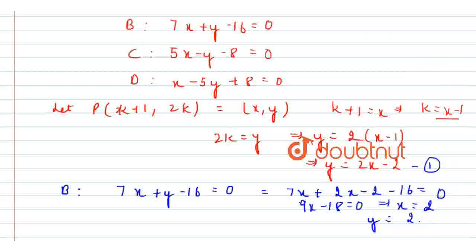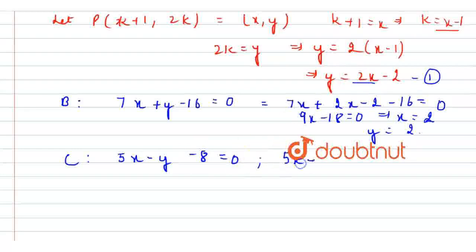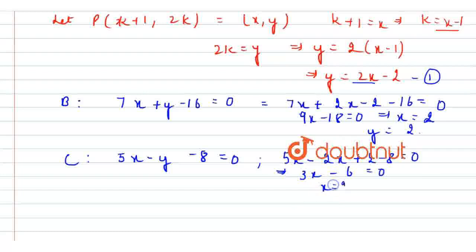Line C has the equation 5x - y - 8 = 0. Using y = 2x - 2 again, it becomes 5x - (2x - 2) - 8 = 0, which gives 3x - 6 = 0. So x = 2 and y = 2. Therefore the coordinates of point C are also (2, 2).